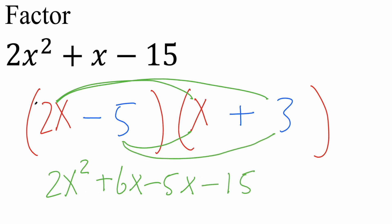Again, 2x squared matches, negative 15 matches, and 6x minus 5x is in fact positive 1x. So that's pretty much it for this video.